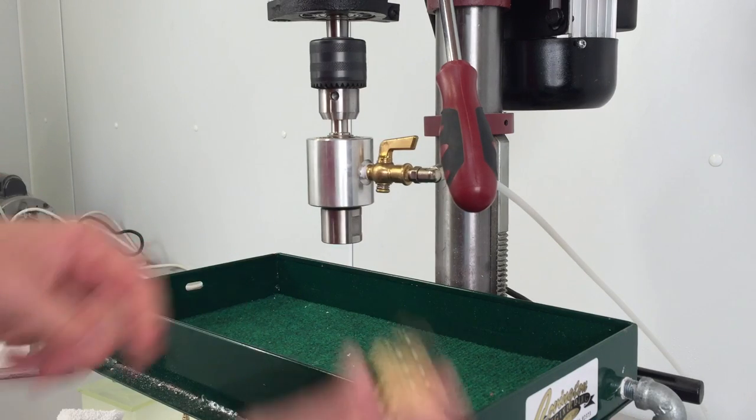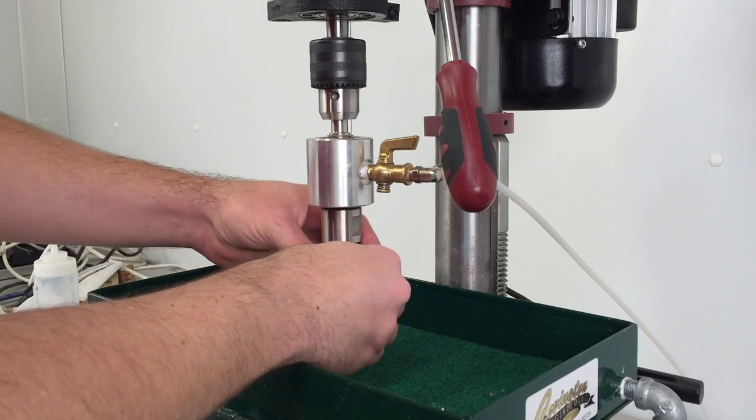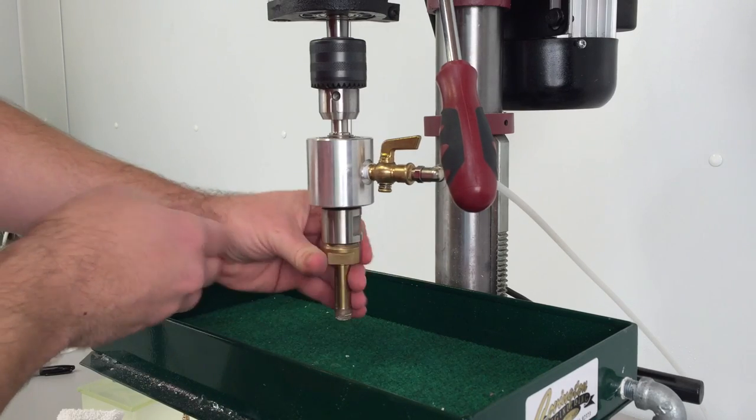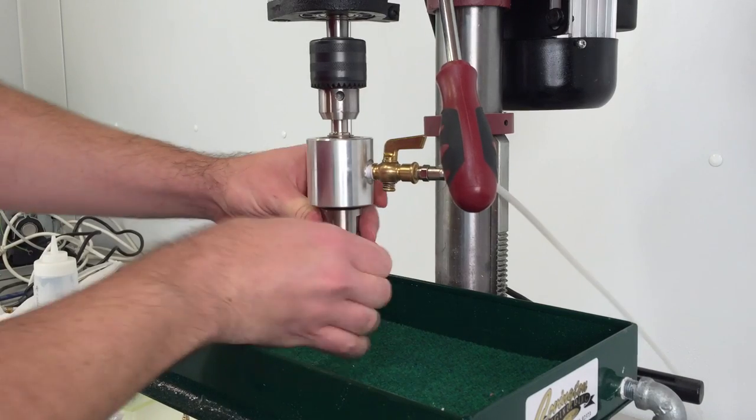The next thing I'm going to do is go ahead and put one of my core drills in. Again, this screws directly into the drill head assembly. You generally don't need to tighten this with the wrenches. Finger tight is good.